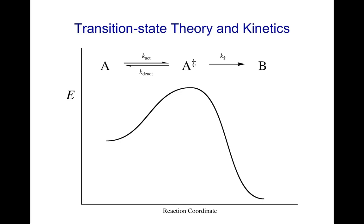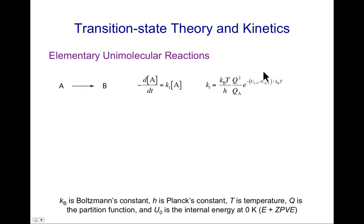A reactant A that is in equilibrium with something called the activated complex. There's a rate constant associated with making an activated complex and a rate constant associated with deactivation, and then there is also a forward rate of the activated complex going to products that I'll call B here. Transition state theory says that if you consider that elementary reaction, a unimolecular reaction, A goes to B.